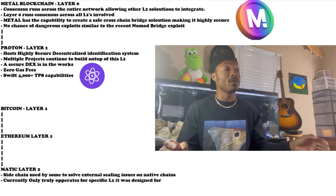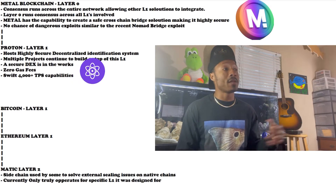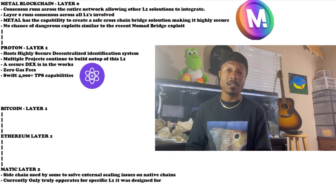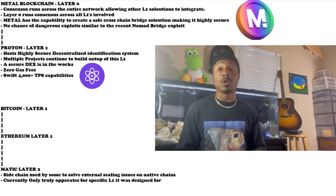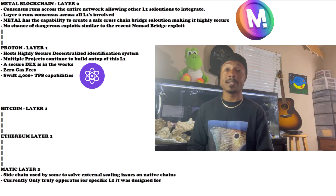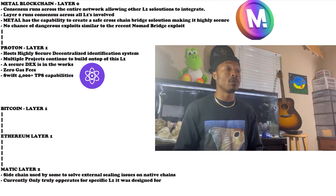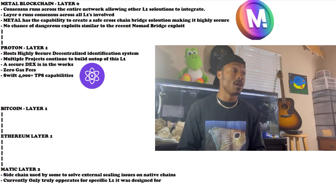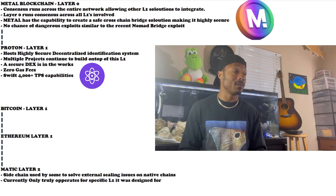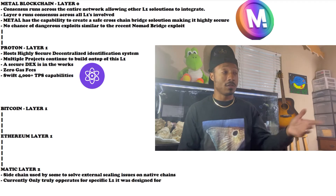This ecosystem is really starting to come together. On top of that, we also have swift 4,000 TPS capabilities — TPS stands for transactions per second. Proton can handle a lot of transactions, which is awesome to see.